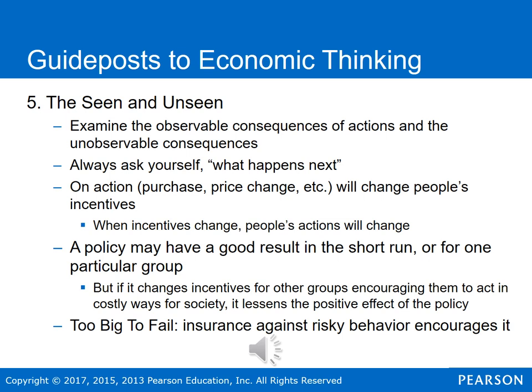For example, from the financial crisis we developed the idea of 'too big to fail' — that certain banks are so large that their failure would be catastrophic. However, insurance against risky behavior tends to encourage it because it becomes less costly. In the short run, bailing out these banks may have prevented the crisis from being worse, but in the long run it changed the incentives, making it relatively less costly for large banks to take risks and encouraging more risky behavior.